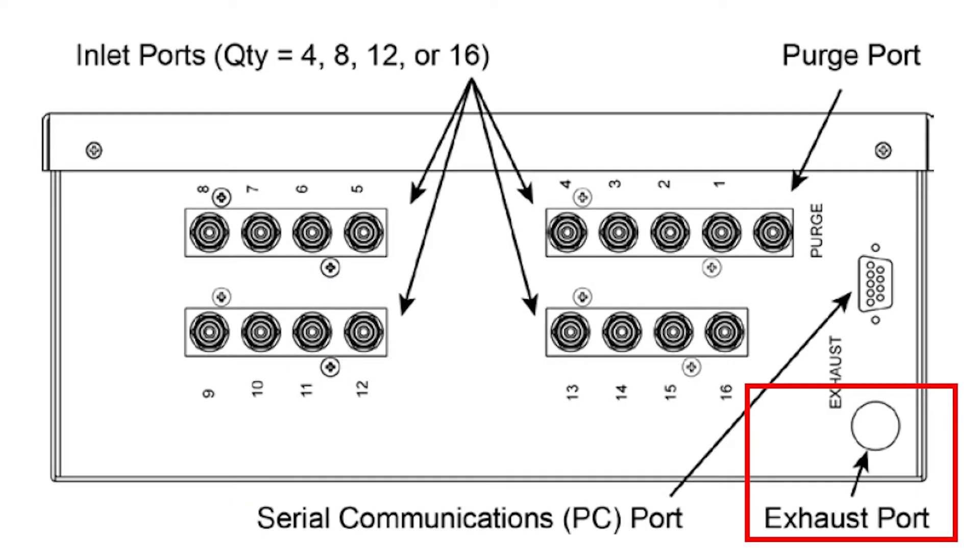The exhaust port is located below the sample zone ports on the left side of the monitor. Run tubing from the exhaust port to a safe area where air samples are not being taken. Make sure the exhaust line is not directly exposed to the elements.